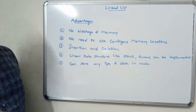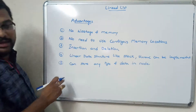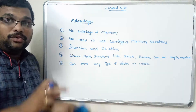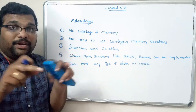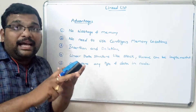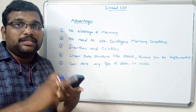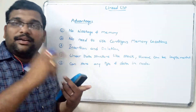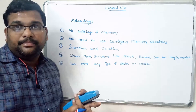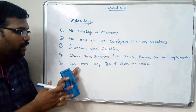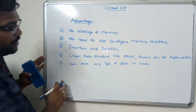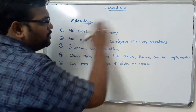A linked list can store any type of data in the node. Every node has two fields: a data field and an address field. In the data field, we can store an integer, a character, a float, or any other data type.